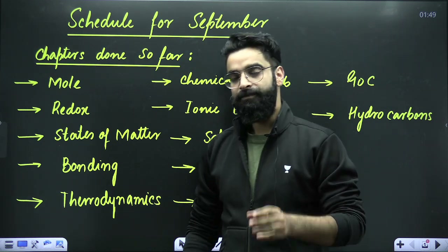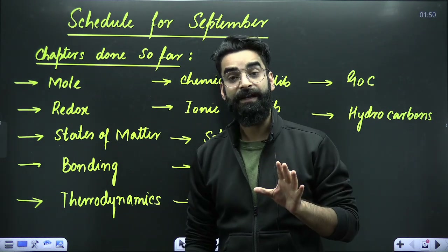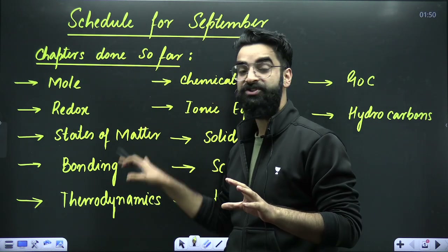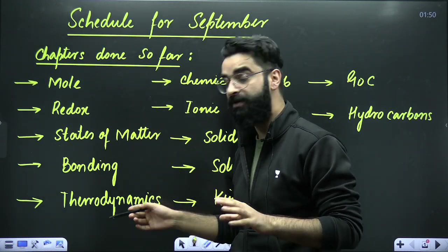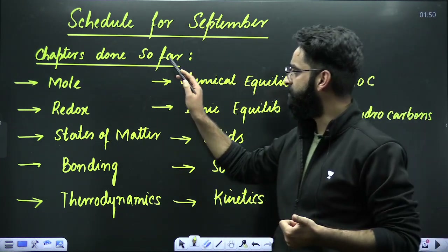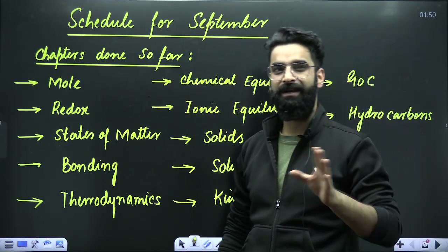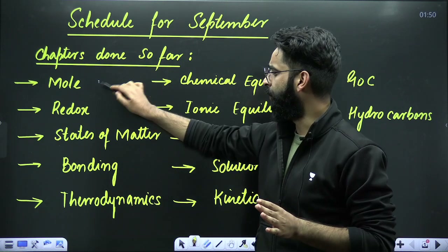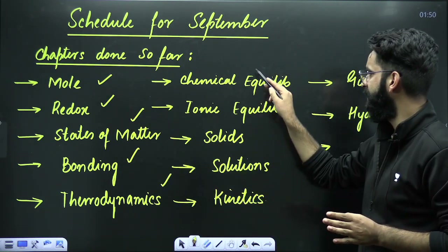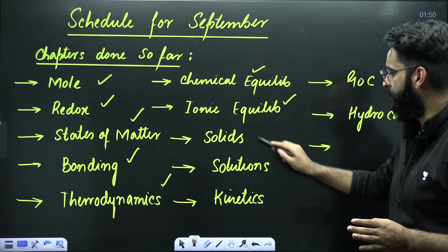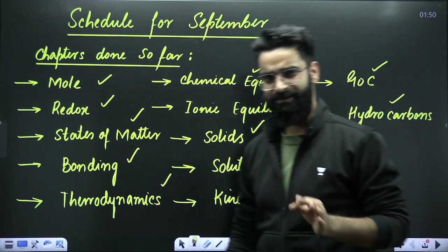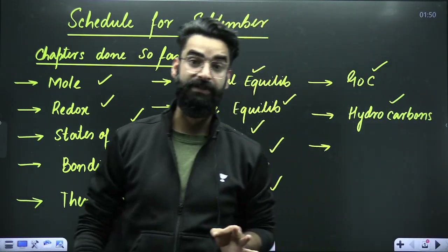So let's first have a look at exactly what chapters we are done with. So far in the last two months we are done with: mole concept, redox, states of matter, chemical bonding, thermodynamics, chemical equilibrium, ionic equilibrium, solid state, solution, kinetics, general organic chemistry, and hydrocarbons. These are the chapters which we are done with.